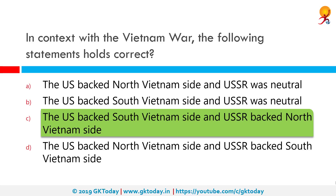The Vietnam War, also known as the Second Indochina War, and in Vietnam as the resistance war against America or simply the American War, was an undeclared war in Vietnam, Laos and Cambodia from November 1955 to the fall of Saigon on 30th April 1975.